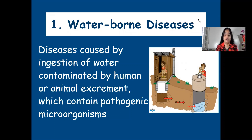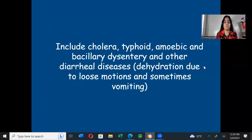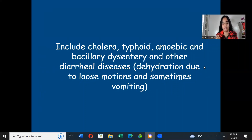Water pollution involves water containing pathogenic microorganisms. When we drink this contaminated water or when groundwater is affected, we get waterborne diseases. Waterborne diseases include cholera, typhoid, amoebic and bacillary dysentery, and other diarrheal diseases — which are mostly characterized by dehydration, loose motion, and vomiting.